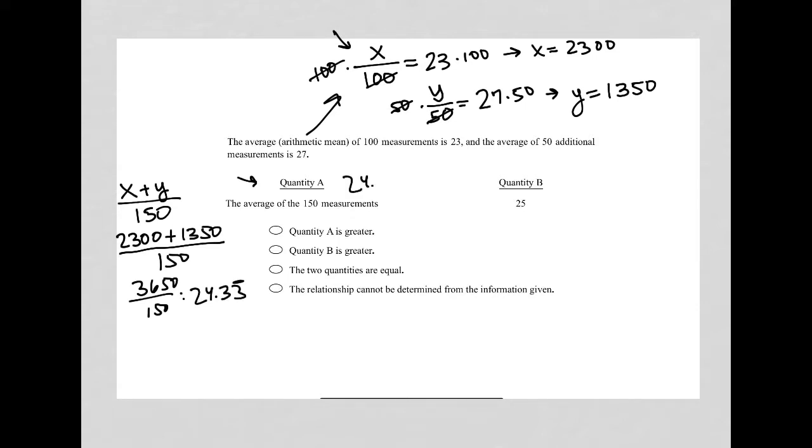So quantity A is 24.33 bar. Quantity B is 25. And therefore, quantity B is greater than quantity A. And our answer must be this one here.